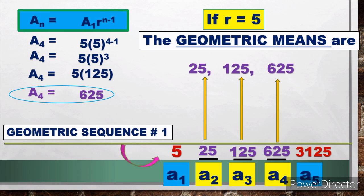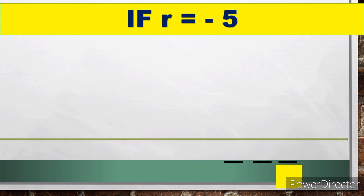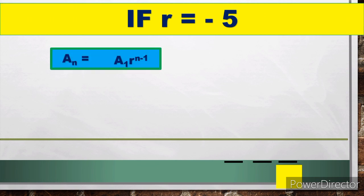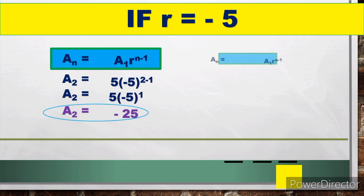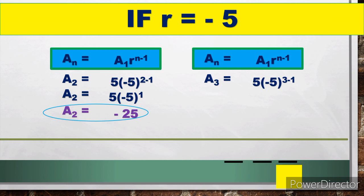The full geometric sequence when r = 5 is: 5, 25, 125, 625, 3125. Now for r = −5: The second term is a₂ = 5 × (−5)^(2−1) = 5 × (−5)¹ = 5 × (−5) = −25. So the second term is −25.